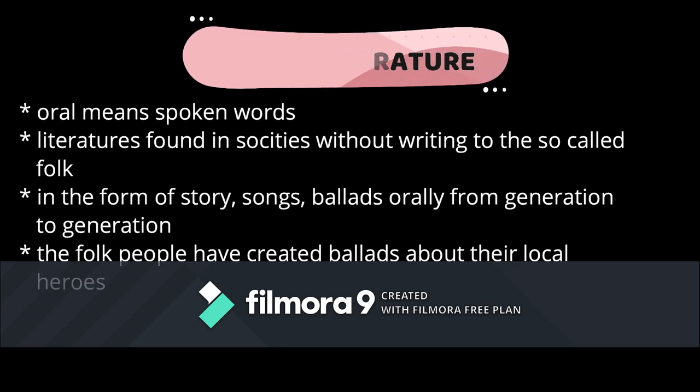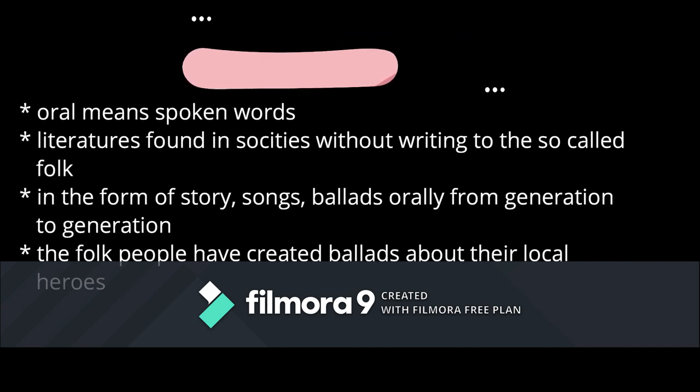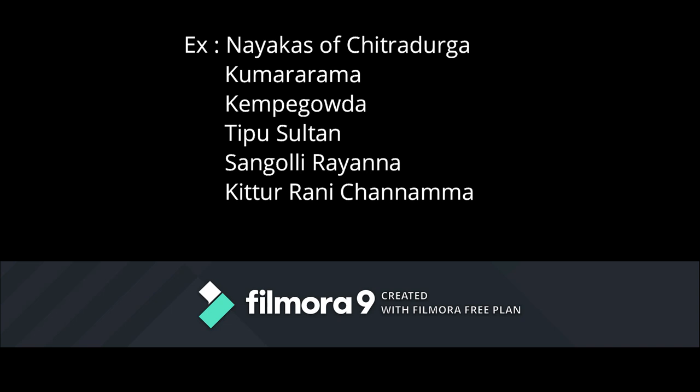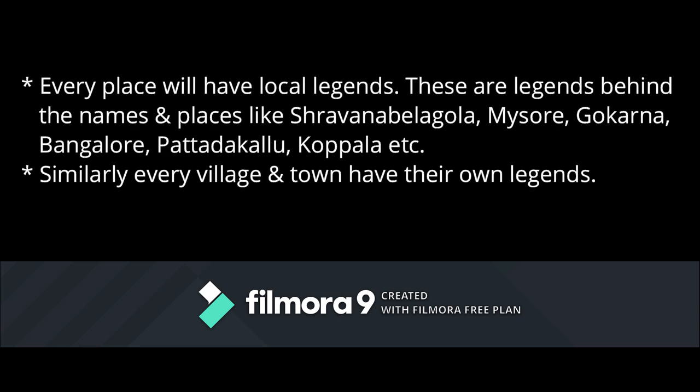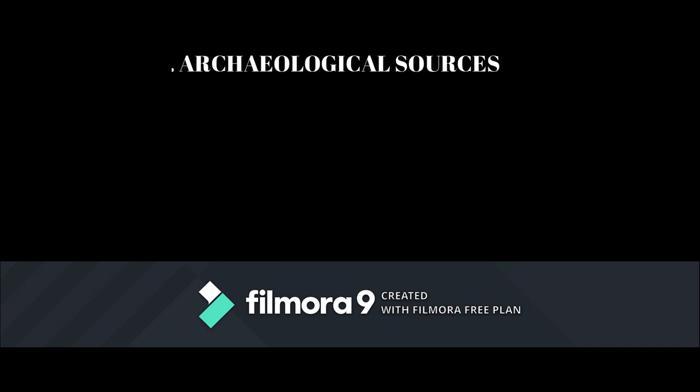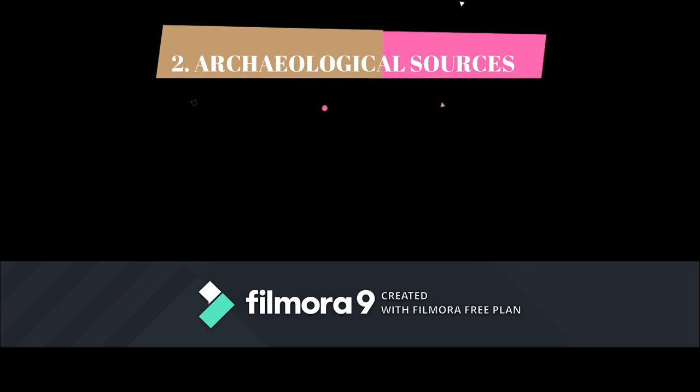People have created ballads about their local heroes. Examples of oral literature include legends about Nayakas of Chitradurga, Kumararama, Kempegowda, Tipu Sultan, Sangolli Rayanna, and Kittur Rani Chennamma. Every place has local legends, such as those behind the names of Shravanabelagola, Mysuru, Bengaluru, Pattadakallu, Gokarna, and Koppal. Similarly, every village and town has its own legends.